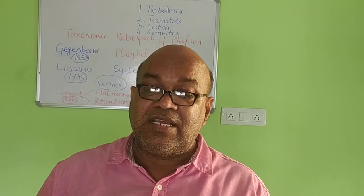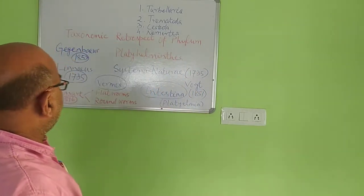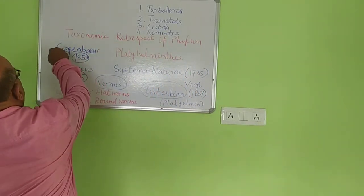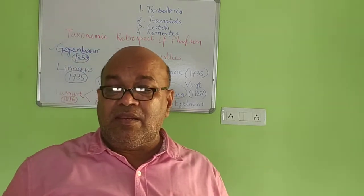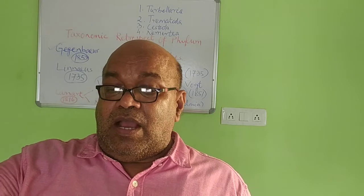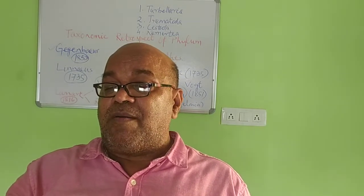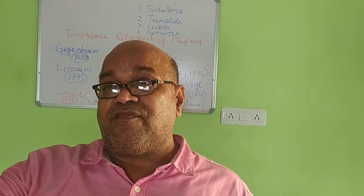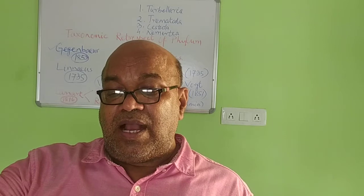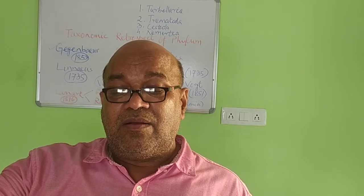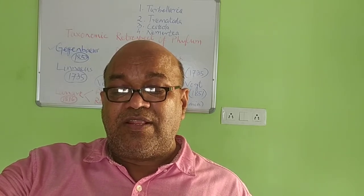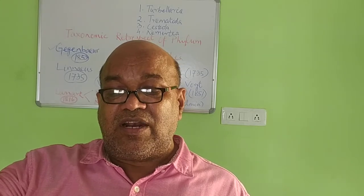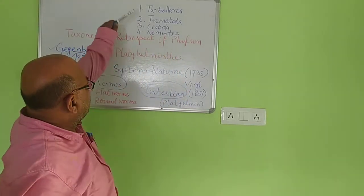However, the scientist Gegenbaur in 1859 first coined the name Platyhelmia and also divided the entire phylum Platyhelmia into four different classes. The first class is called Turbellaria — T-U-R-B-E-L-L-A-R-I-A.